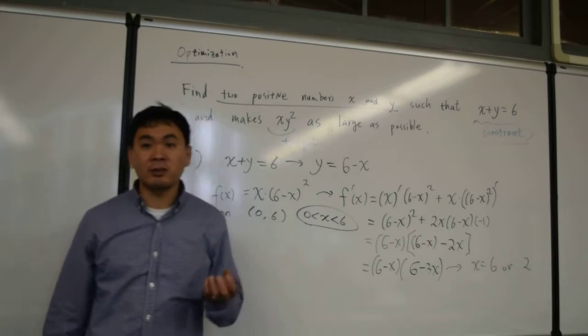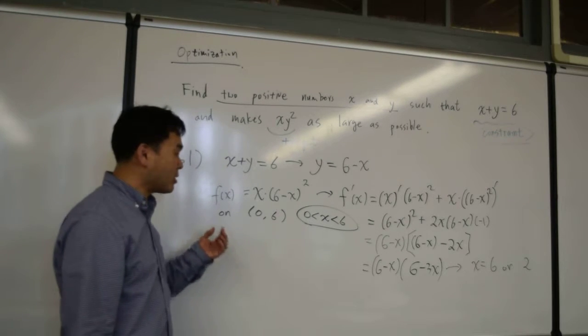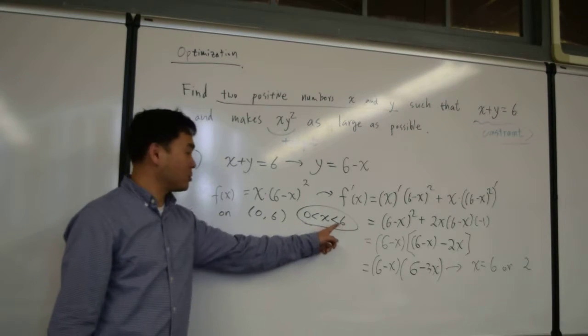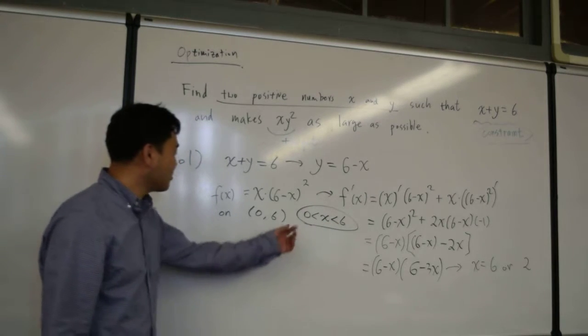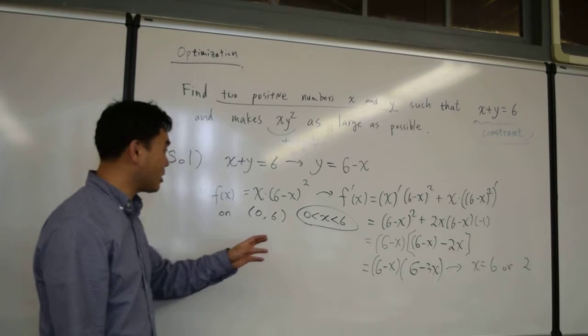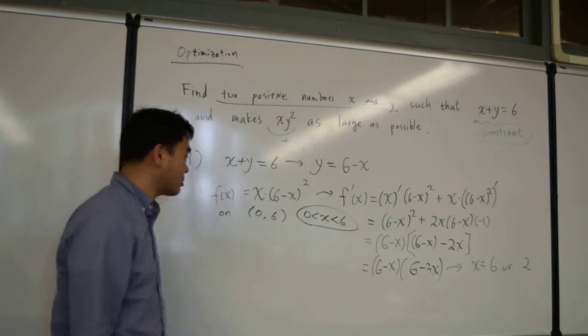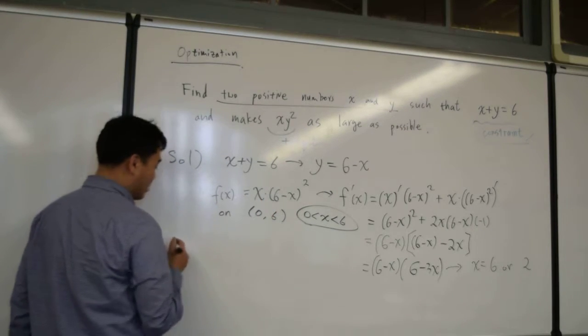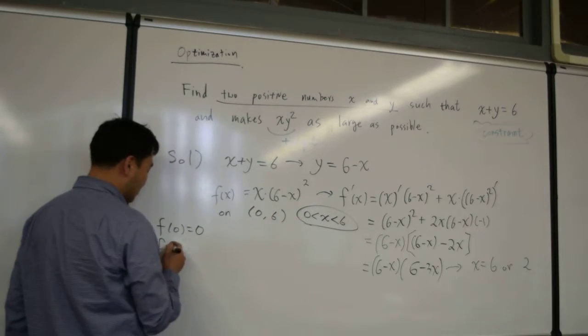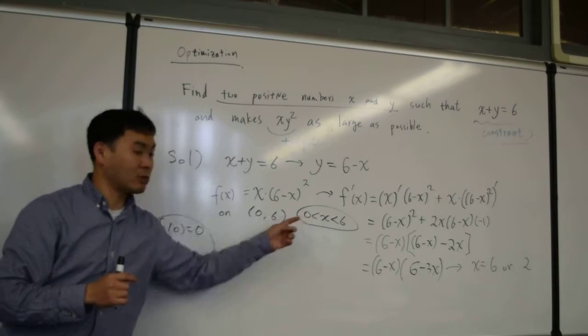Now, we learned that for continuous functions, the maximum or minimum always happens either at the boundary or at critical points, right? But because boundaries are not really an option, you can just plug them in to compare what happens when you get near the boundary. Maybe you can't plug in 0, but in order to figure out what happens if you take x to be as close to 0 as possible, you can plug 0 in. What do you get if you plug 0 in? 0, because 0 times anything is 0. Same thing for f of 6. That's equal to 0. So this function near 6 or 0, it's going to be almost 0.